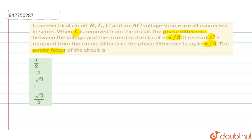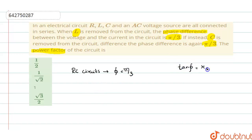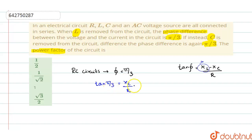Let us write two equations separately for both cases. When L is removed, only R and C remain — RC circuit. The general equation is tan φ = (XL − XC) / R. For the RC circuit, XL is not there, so tan(π/3) = XC / R. Since tan(π/3) = √3, we get XC = √3 · R. Call this equation 1.